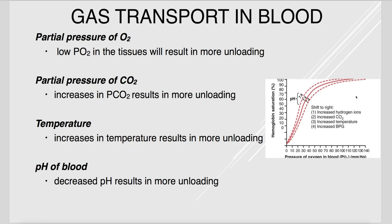Several factors affect the unloading of oxygen from hemoglobin. Low partial pressure of oxygen in the tissues causes hemoglobin to unload more oxygen. More CO2 in the tissues also triggers more unloading — increased CO2 signals higher metabolic demand. As temperature increases, hemoglobin unloads more oxygen. As pH drops, hemoglobin unloads more oxygen as well, since decreased pH signals rising CO2 levels and increased metabolic demands.